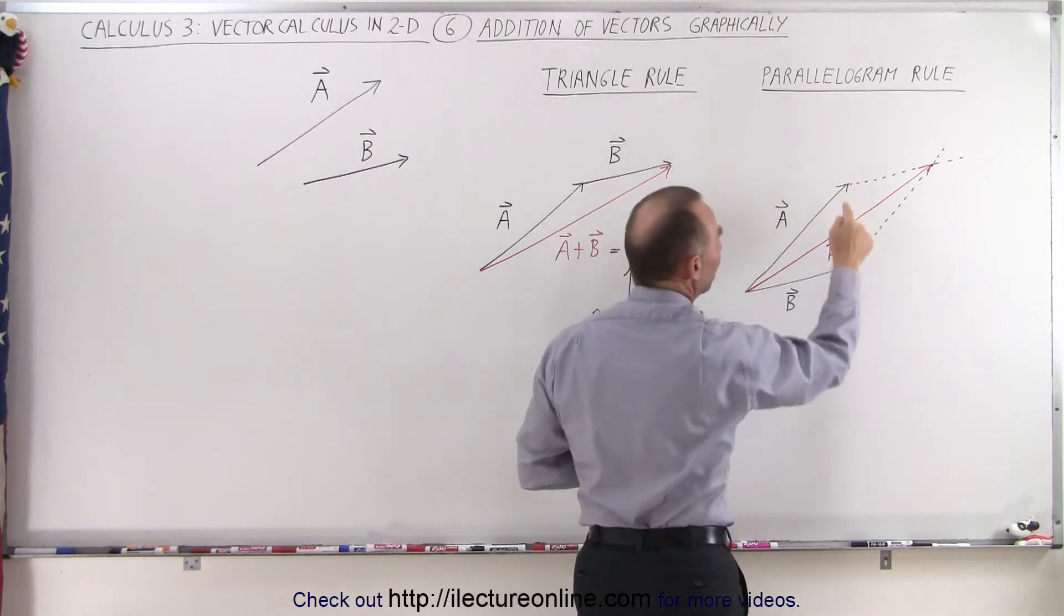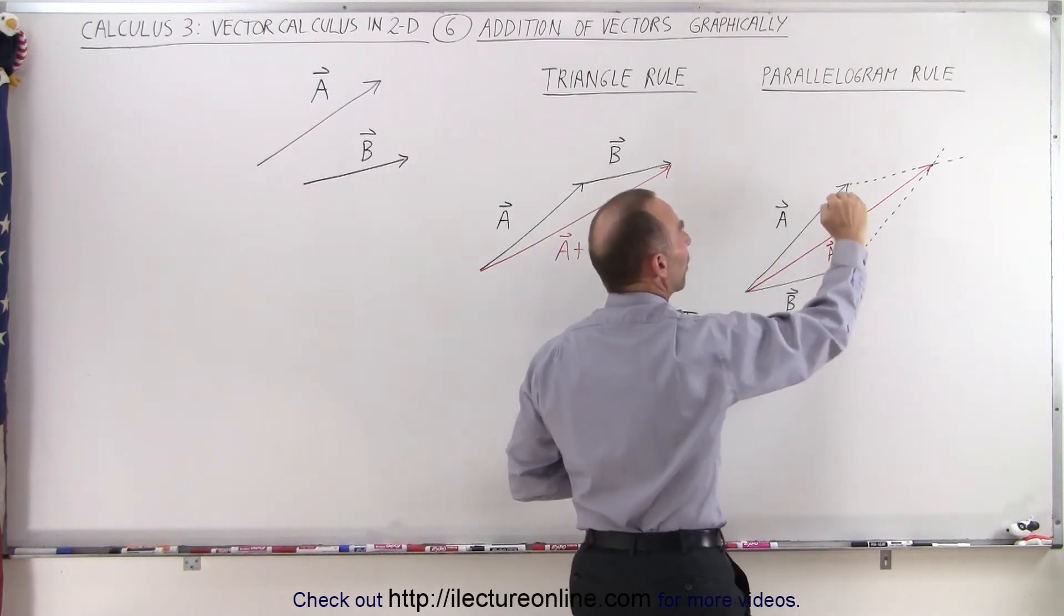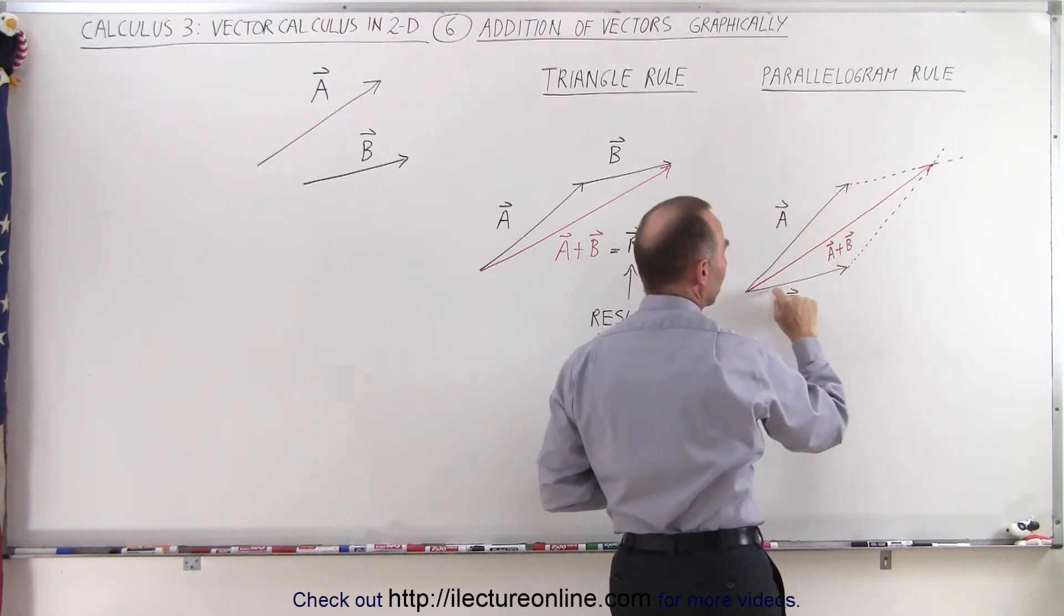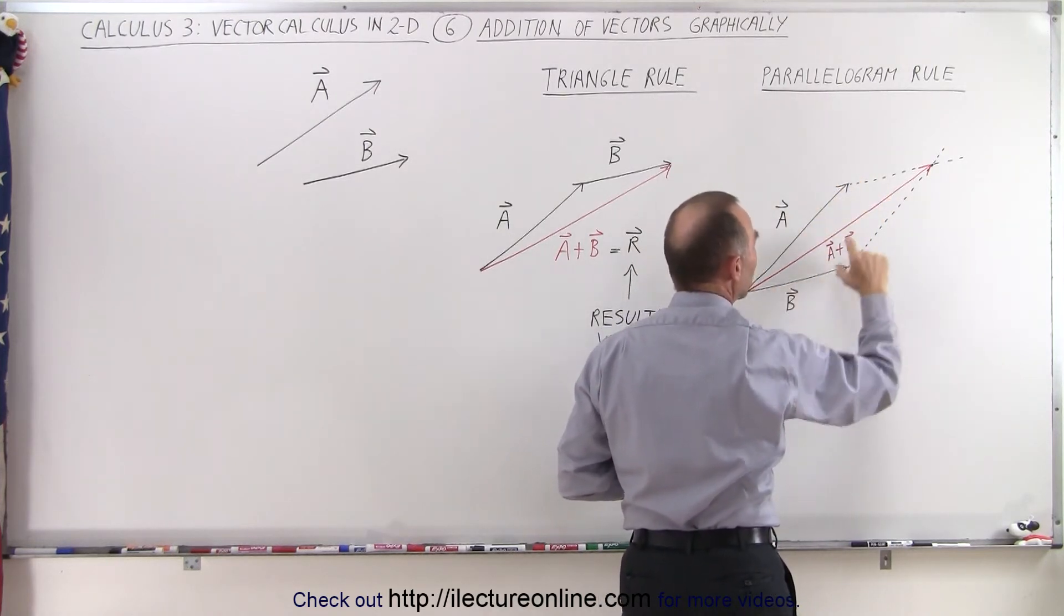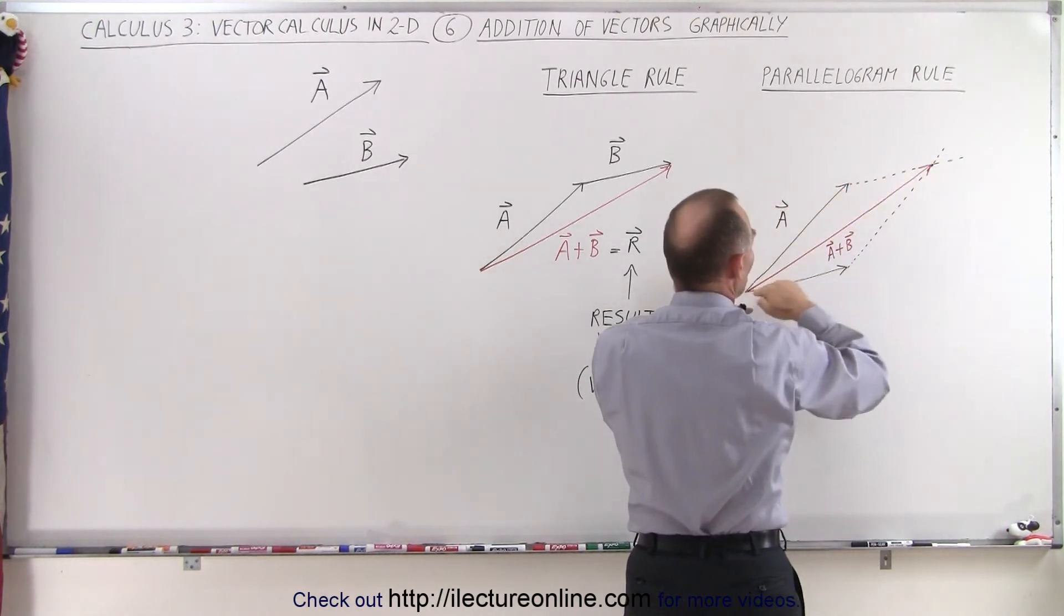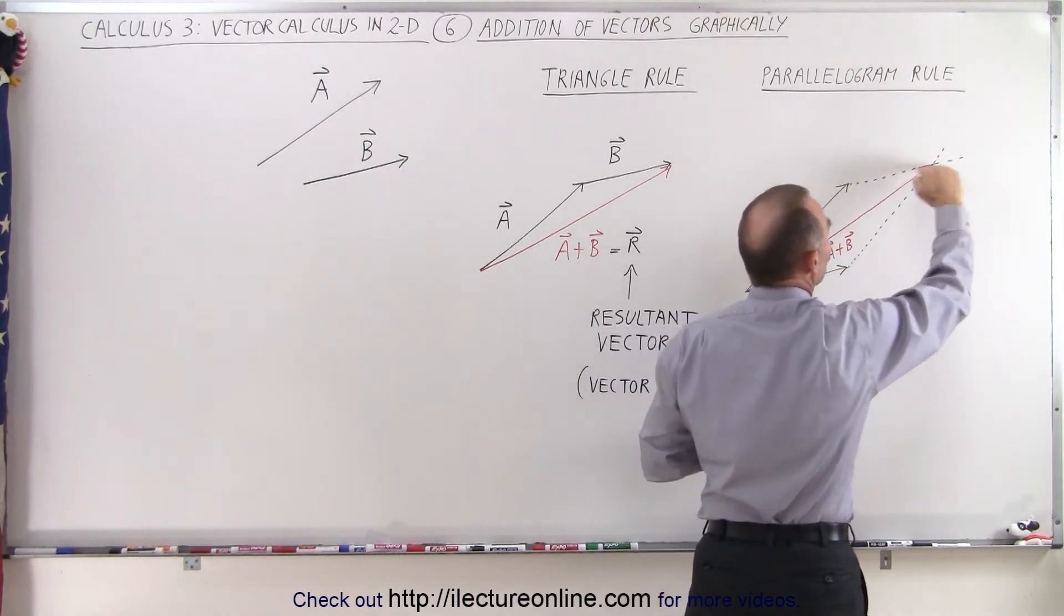Then you go to the tip of each of the two vectors. You draw a line on the first vector starting from the tip of the first vector parallel to the other vector. So you draw another line so that the two lines are parallel, that the direction of vector B is parallel to this line.